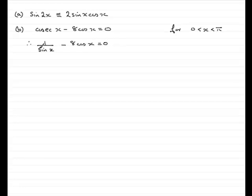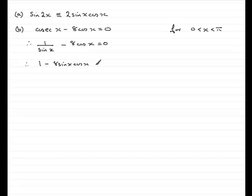We've got a fractional equation here, and I'd want to remove this fraction — the sin(x) — so I'm going to multiply both sides by sin(x). That's going to give me 1, then we're going to have minus 8sin(x)cos(x), and 0 times sin(x) is obviously 0.